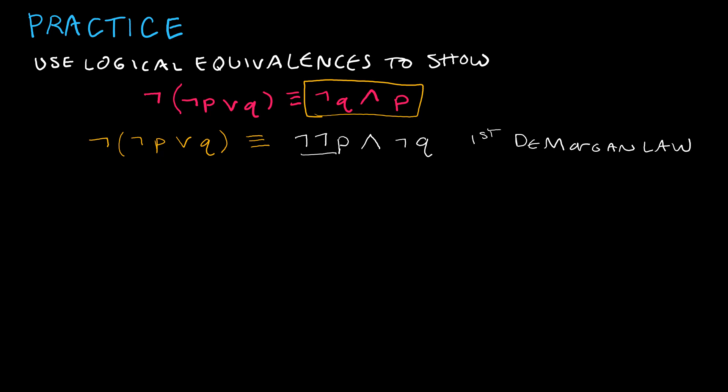Now, I see that I've got a NOT, NOT, I've got a double negation here, and so for my double negation, I'm going to call that P, AND, NOT Q. And how did I do that? That's by the double negation law.